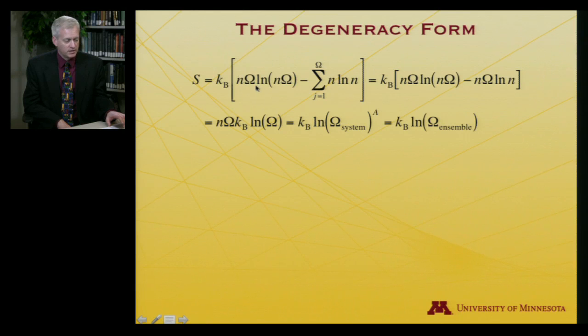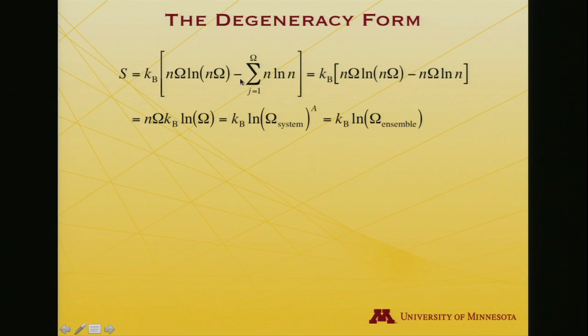So here was a capital A, n times the degeneracy, here it was again, minus, now my sum, I'll emphasize that the upper limit is the degeneracy, the capital omega, of n log n.